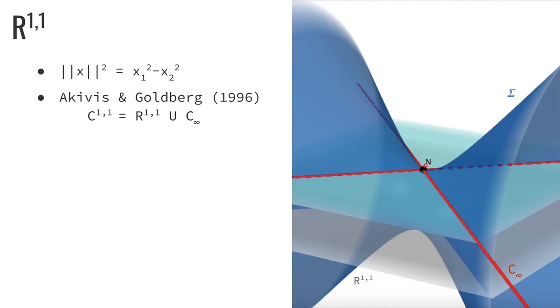This is only step one, inverse stereographic projection. If anything, you should say that sigma is R^{1,1} plus the cone at infinity.